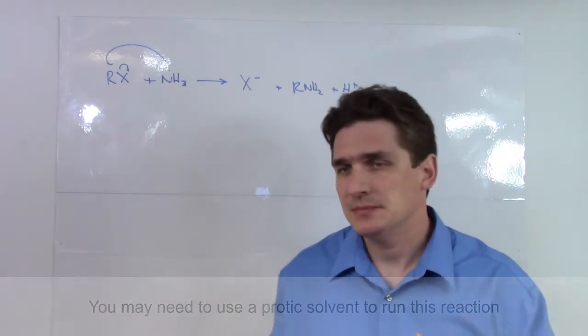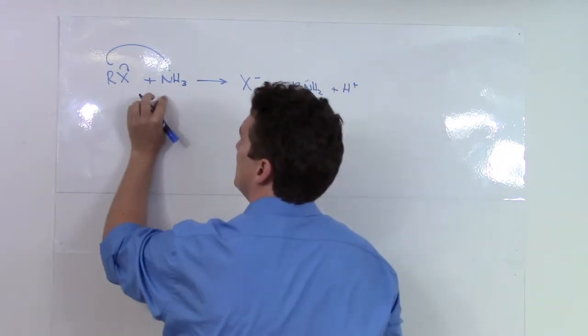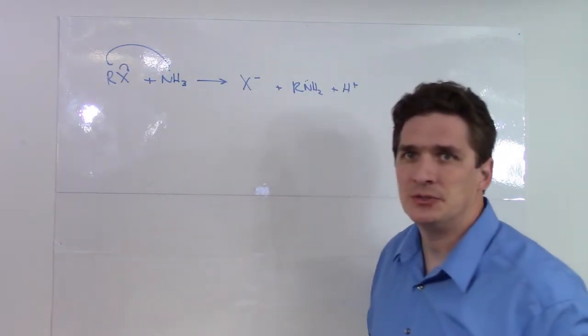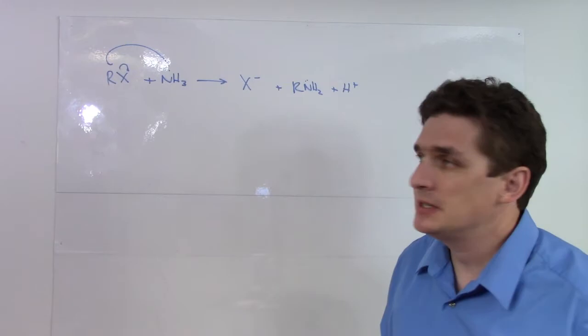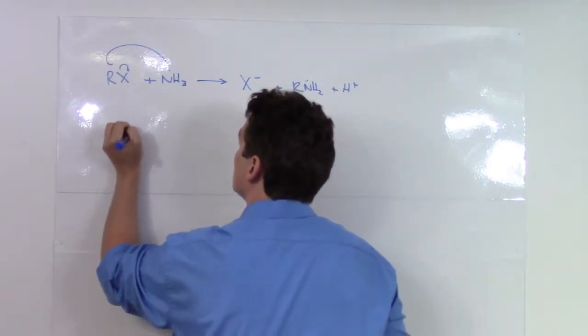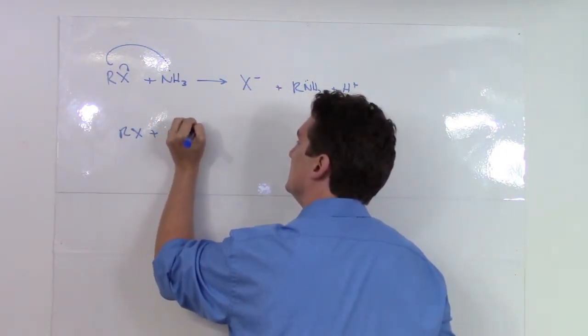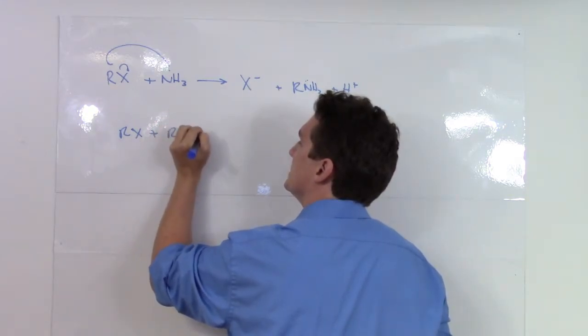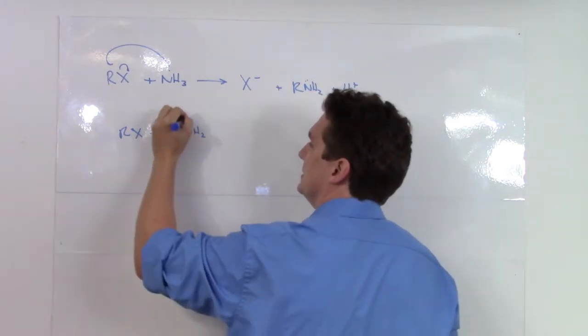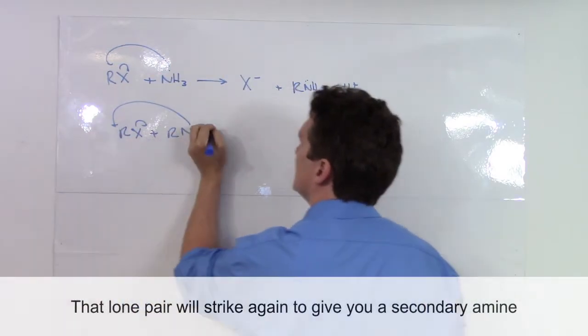Actually, there is a problem. Did you see this nitrogen still has a lone pair on it? And remember we were able to eliminate the halogen group here by using the lone pairs of the nitrogen. So if the RX is still present, this can further attack the halogen and displace it.